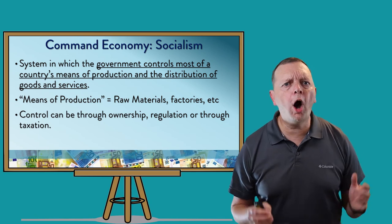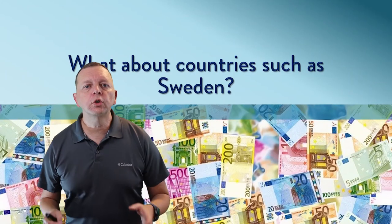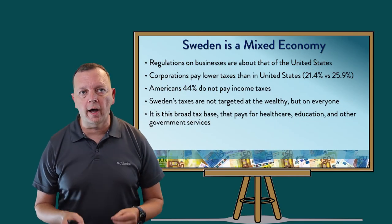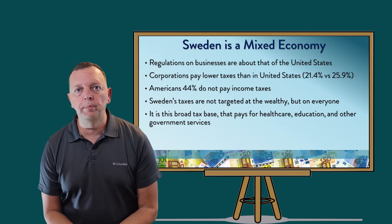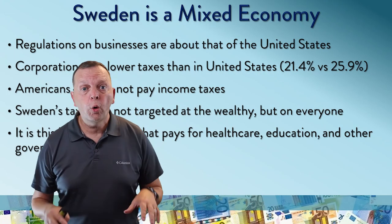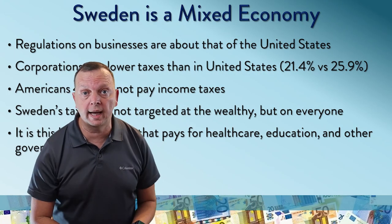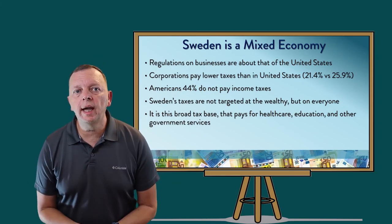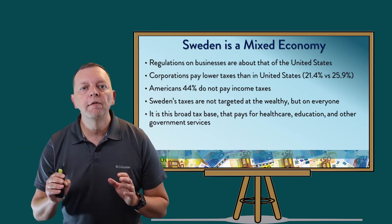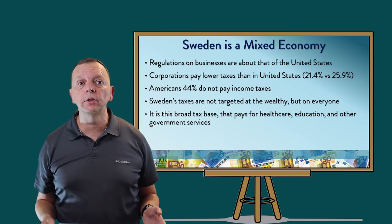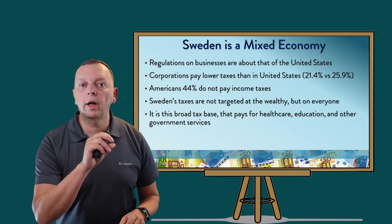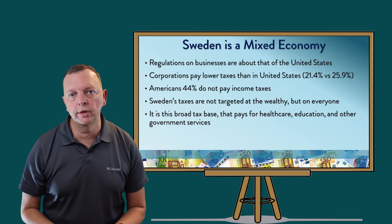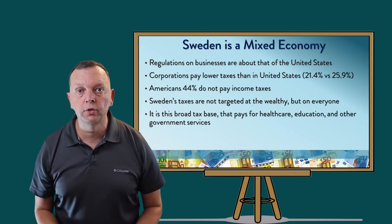This control could be ownership by the government or through regulation or taxation. Now, you might be thinking — oh, like Sweden, right? Well, Sweden actually isn't a socialist economy. It actually has what is known as a mixed economy. Looking at the regulations of businesses within Sweden, it's about that of the United States. Corporations actually pay lower taxes in Sweden than they do in the United States. In the United States, 44% of all Americans don't actually pay income taxes. But in Sweden, taxes are not targeted to the wealthy but on everyone, which allows them to provide services such as healthcare, education, and other government services.